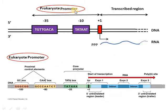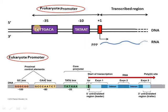Yeh prokaryote ka promoter hai — plus 1 se transcription shuru ho rahi hai, transcribe region hai, iske nateeje mein RNA ban raha hai. 10 base pairs pehle TATAAT sequence hai, 35 base pairs pehle TTGACA sequence hai. Agar aapko yeh diagram aasaan lagti hai, aap yeh bana lijiye. Theek hai ji?